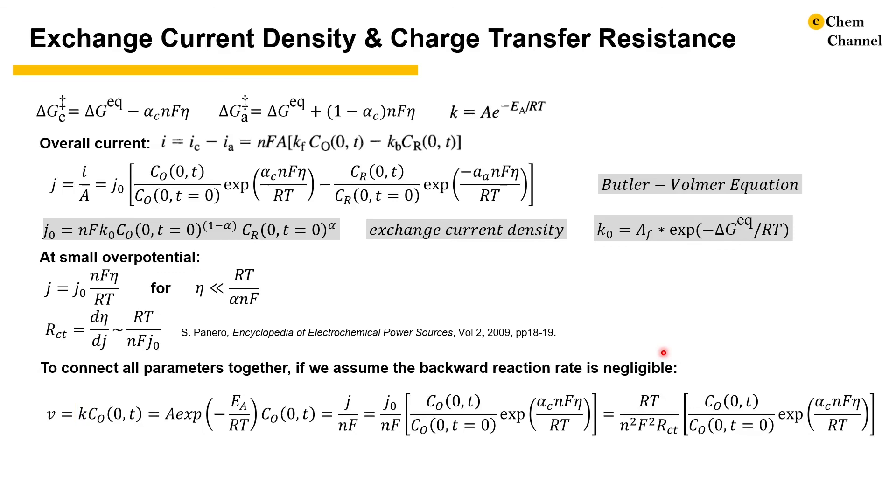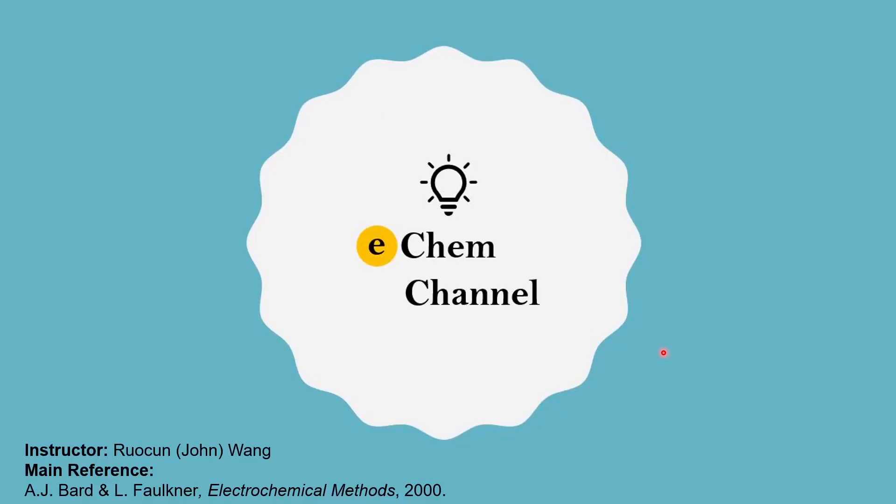At last, as a visual aid, all equations are put together here to show the connections among the rate constant, activation energy, exchange current density, and charge transfer resistance. In practice, the situation where some relationships can be valid is restrictive. I hope these explanations help you gain more insights into the parameters related to the charge transfer processes.